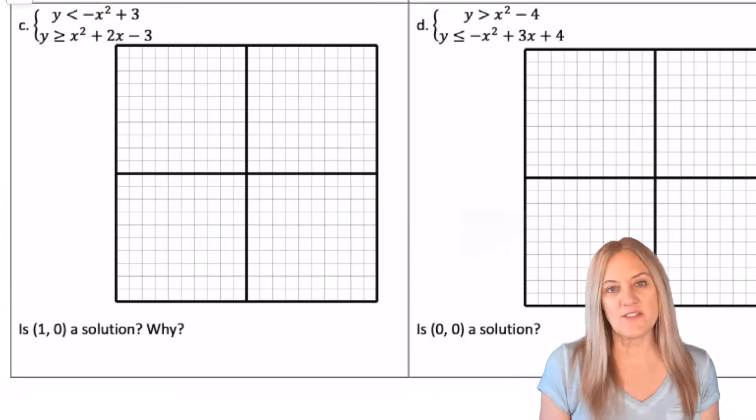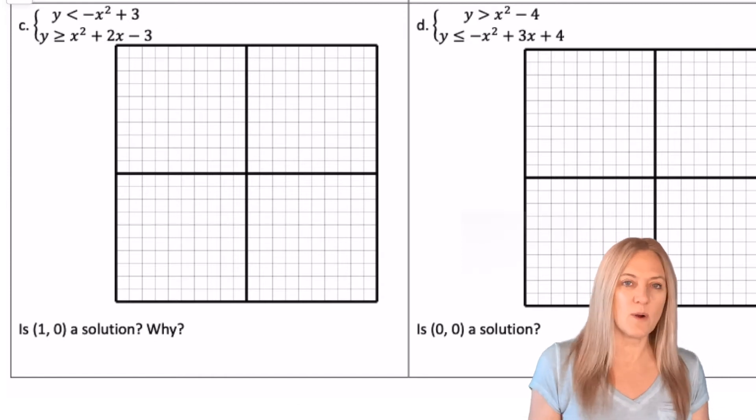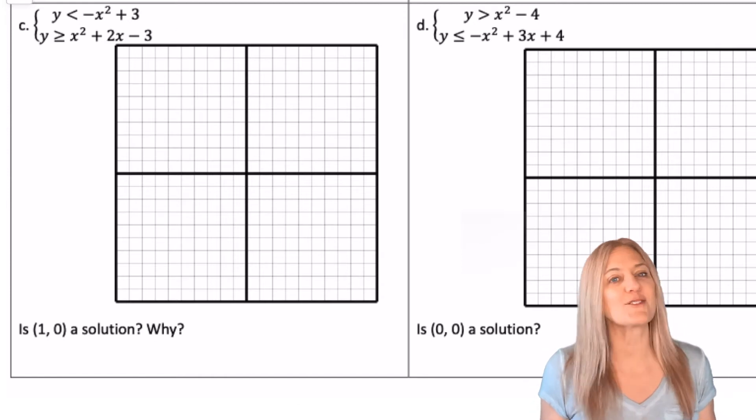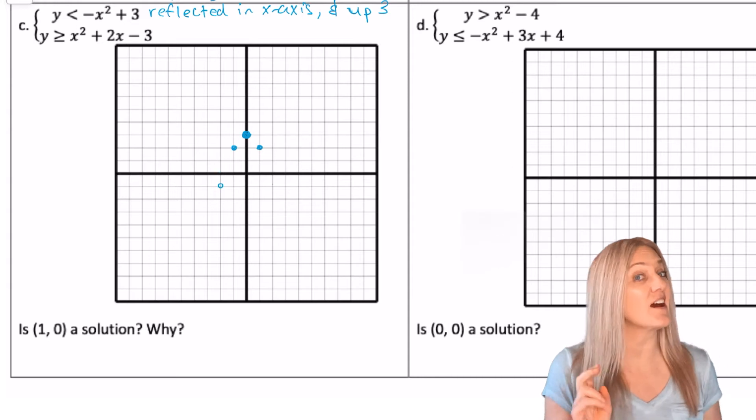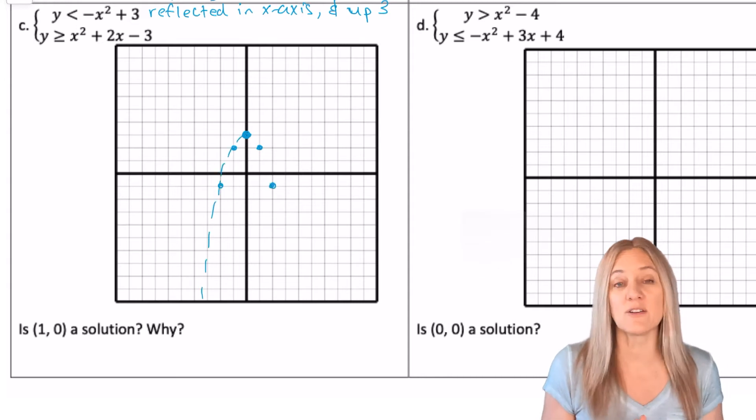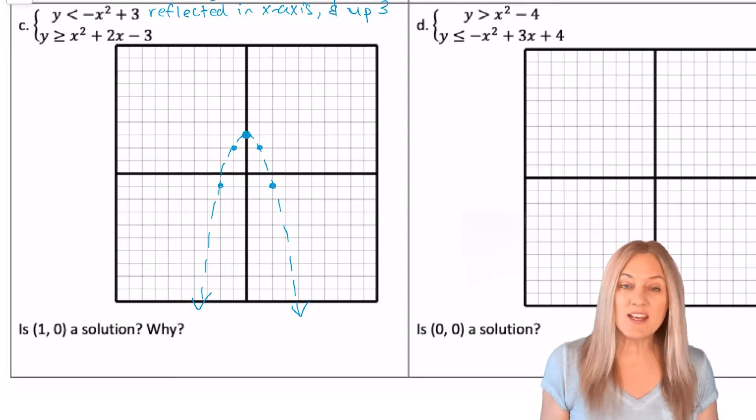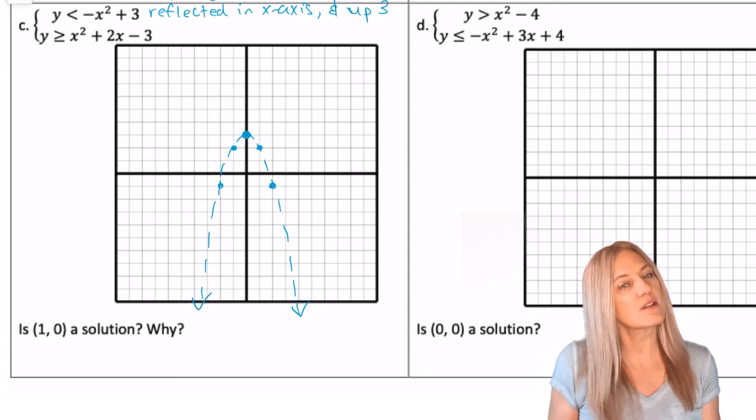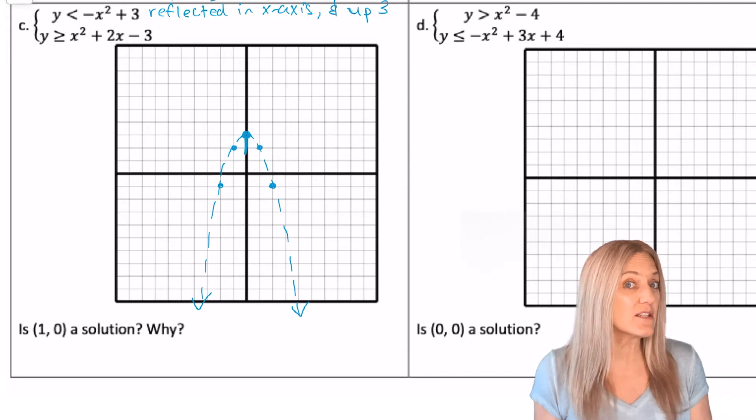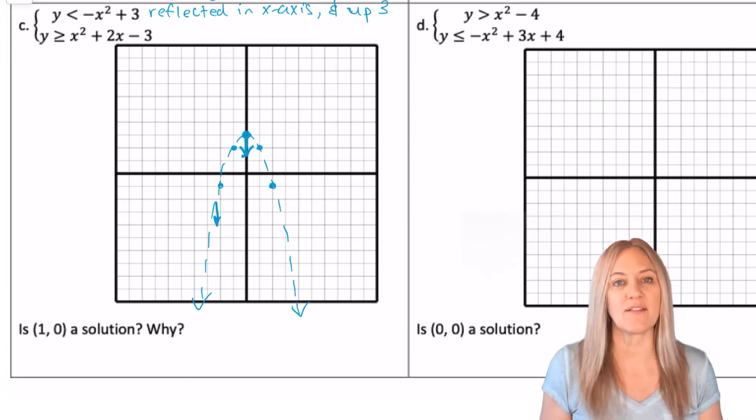Systems of quadratic inequalities. The first quadratic inequality is simply the parent function that's been reflected and translated up three units. So let's go ahead and graph that one. Make sure that you made the first parabola dashed, and then of course it's less than, so it's going to be inside.